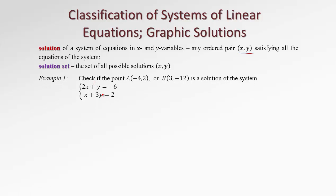Let's look at this example. First, we need to be able to check if a point given by an ordered pair of numbers is a solution to the system or not. For example, is the point A with given coordinates a solution to this system? If it is, it's supposed to satisfy both equations. That means if we plug in the values for x and y into each of those equations, the equation is supposed to be true.